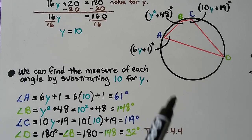And D, if we know that B is 148, we do 180 degrees because they're supplementary minus angle B, so it's 180 minus that 148. We know angle D is 32 degrees. That was from theorem 12.4.4.